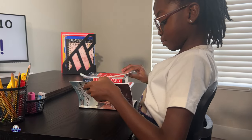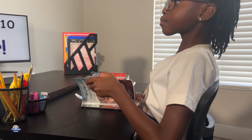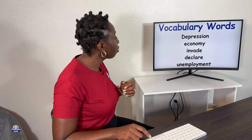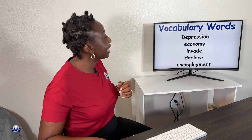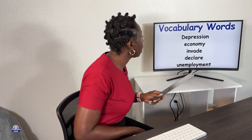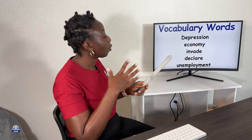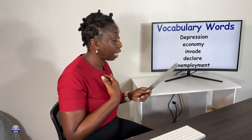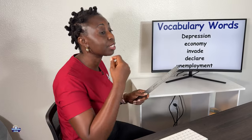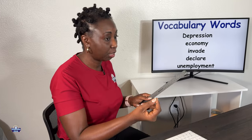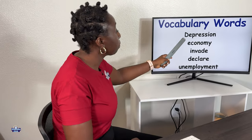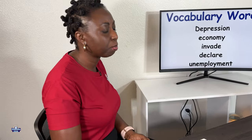Before we read, we're going to look at some vocabulary words. I'm going to say the word first — you might know some of these words — and you're going to repeat after me. Depression. Now I'm going to use an action: depression.